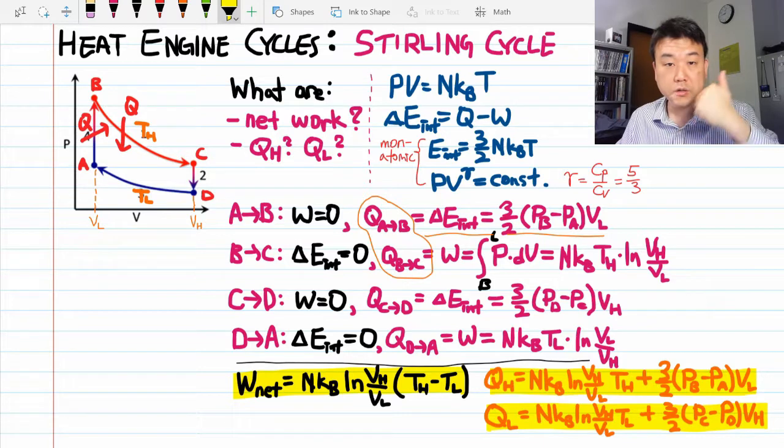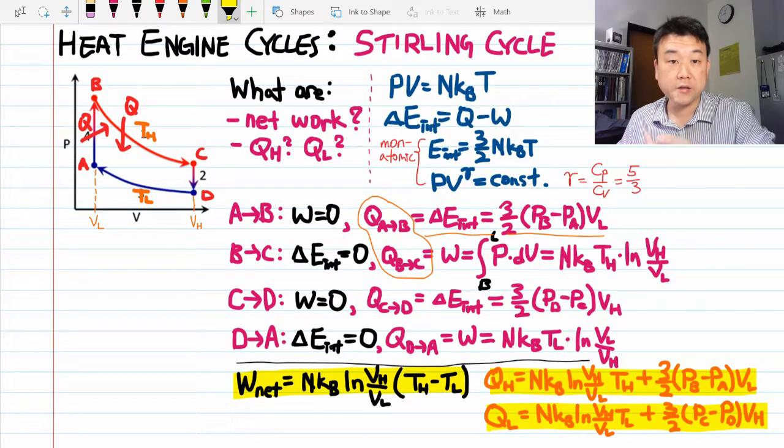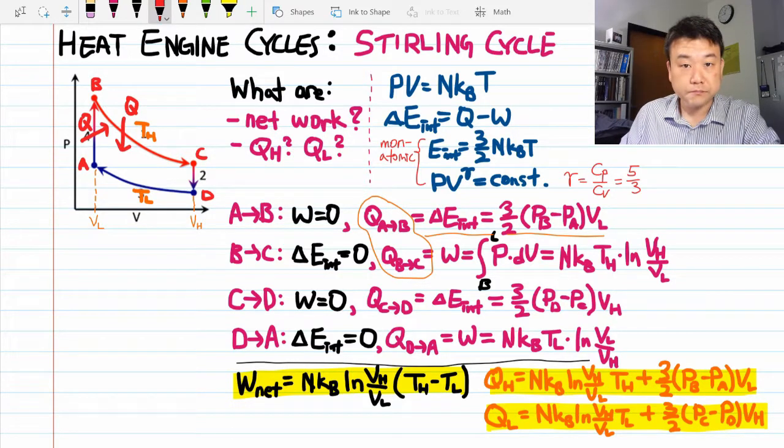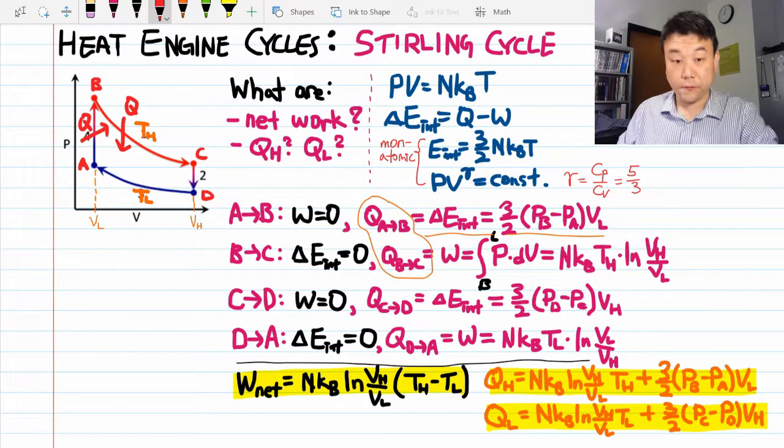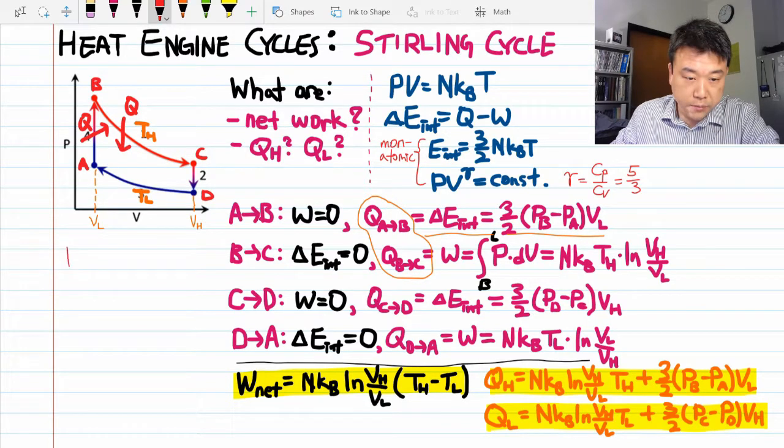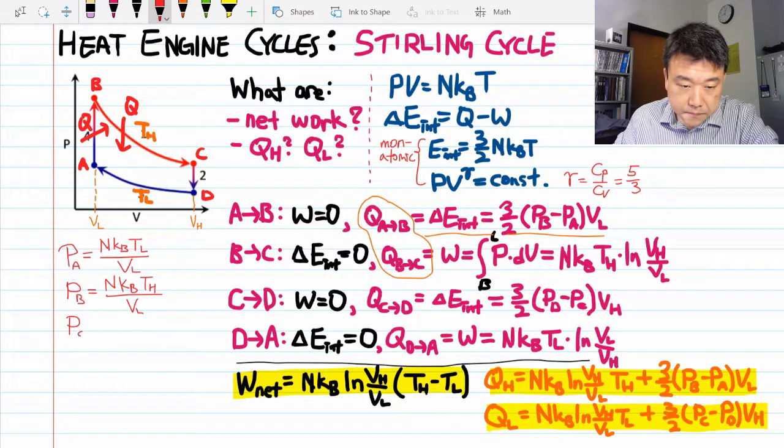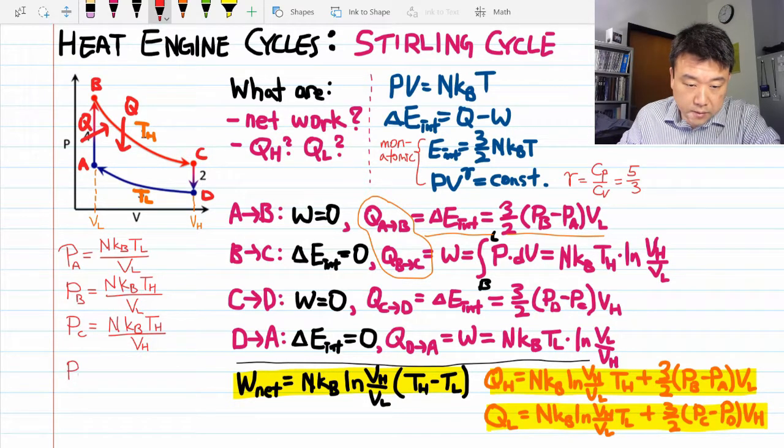For all of them, we have the temperature and volume at those points. So it's a matter of using the ideal gas law to write down what the pressure is in terms of those. So I guess I need pressure at all four points: pressure at point A, point B, point C, and finally point D.